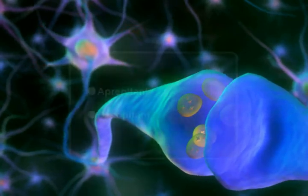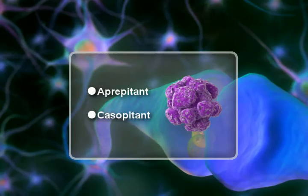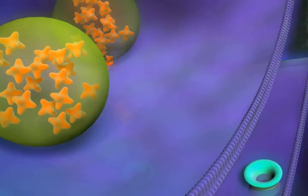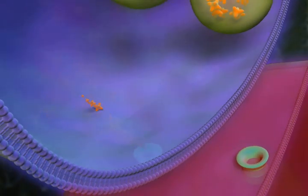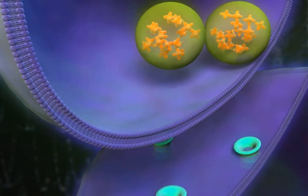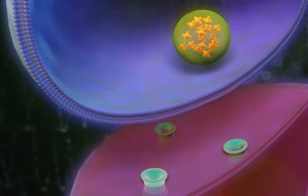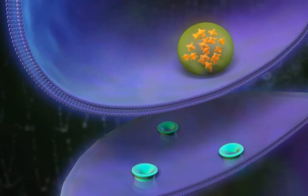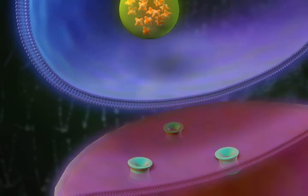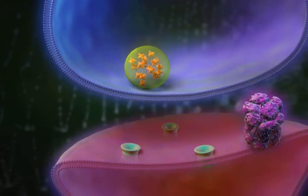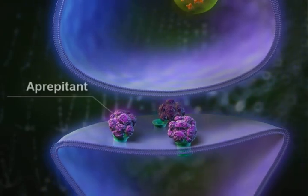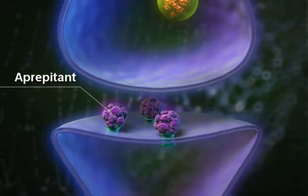Aprepitant blocks the NK1 receptor located at the brain stem nuclei of the dorsal vagal complex, which is a crucial part of the regulation of vomiting. SP is responsible for sending and receiving impulses to and from the brain to the vomiting center of the brain where SP is in high concentration.